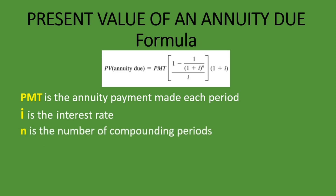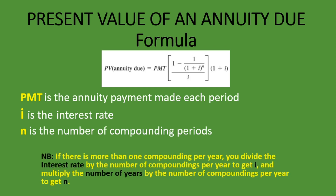N is the number of compounding periods. As we mentioned in our other lessons, N is not necessarily the number of years — it's the number of compounding periods, depending on how many compoundings you have per year. If there is more than one compounding per year, you divide the interest rate by the number of compoundings per year to get I, and you multiply the number of years by the number of compoundings per year to get N. But if it's only compounded once, like annually, your I remains the given interest rate and your N is the number of years given.